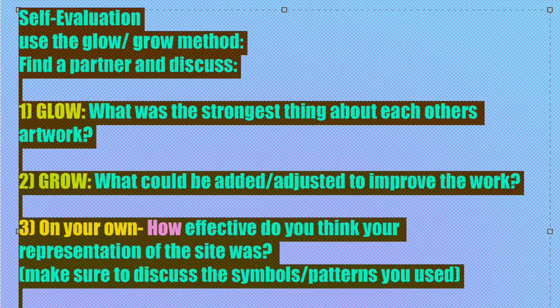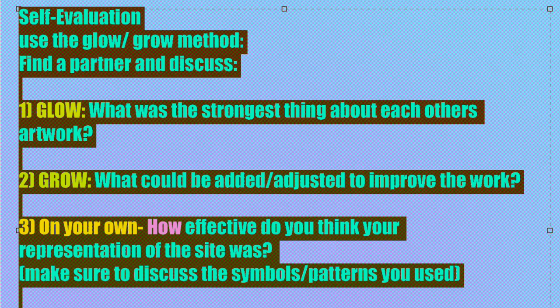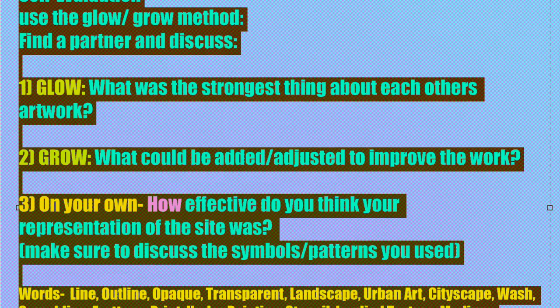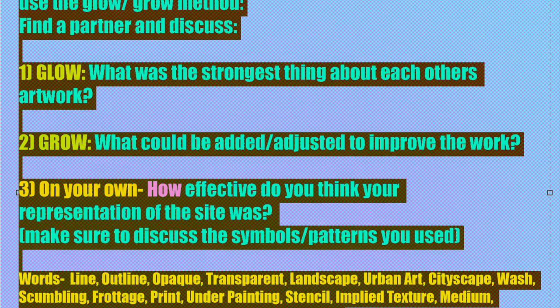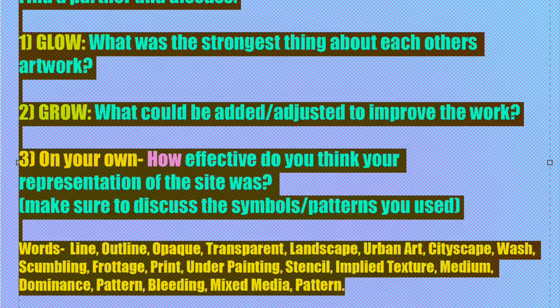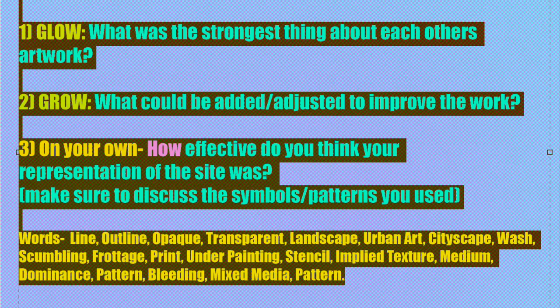In this class we use the glow and grow method. First, discuss in pairs or groups of three. Often your peers can find things in your artwork that you didn't notice yourself because you're just that little bit too close to it. Your final written evaluation should include elements of the conversation you had with your friends — what did you learn from that? We're also discussing how well we went at representing our site: the visual appearance of it, picking out and identifying those little details and patterns. Have you captured the feel of the place?